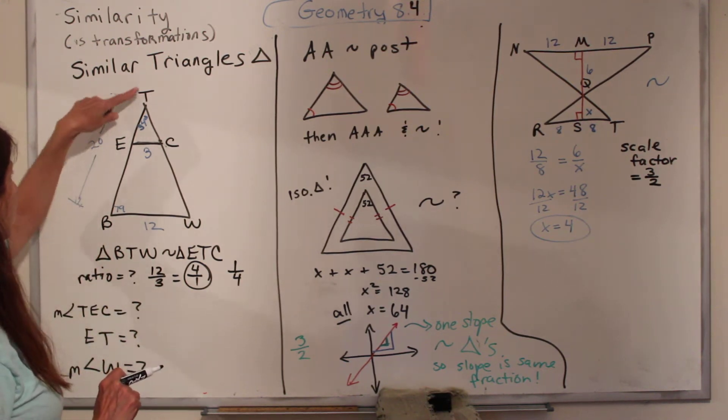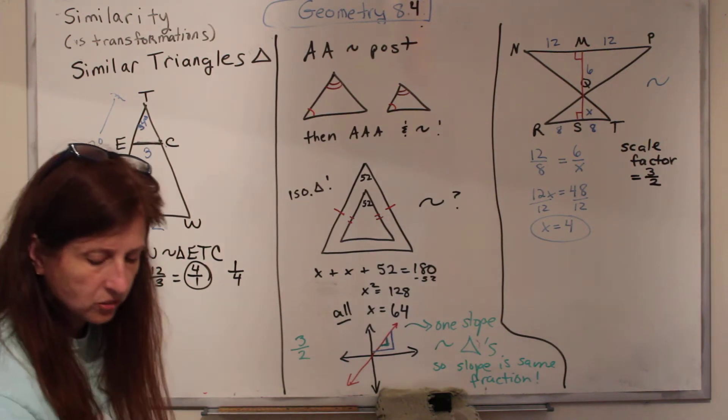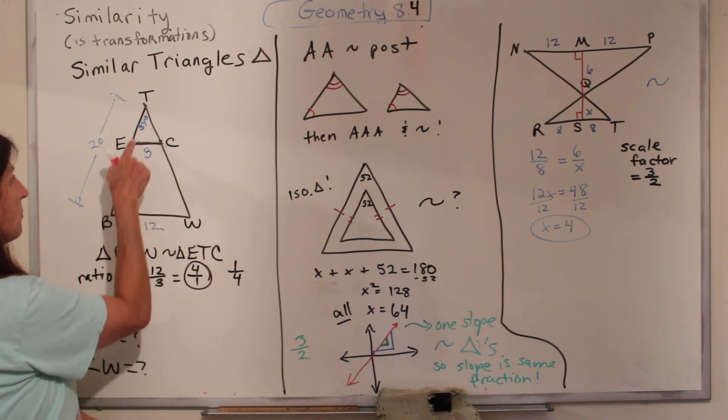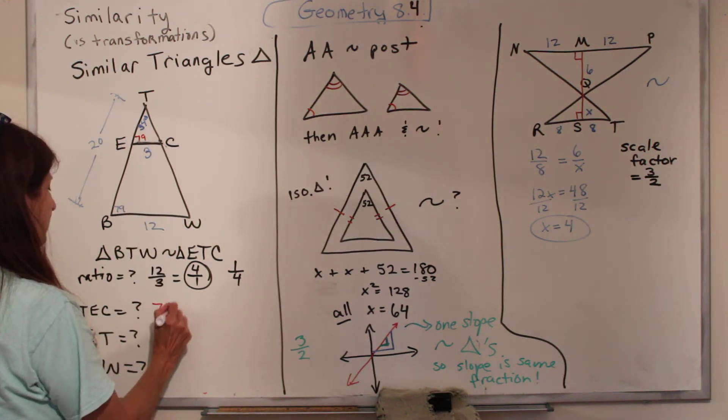Okay, so what is the measure of angle TEC, that one right there? Well, similar triangles, their angles have the same measure, in the same place. This is the bottom corner, that's the bottom corner, so that one is 79 degrees also.